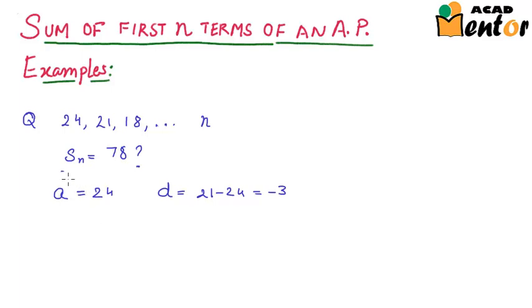We are also given that Sn is equal to 78. Now we remember from the previous video that Sn was equal to n by 2, 2a plus n minus 1 times d.